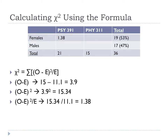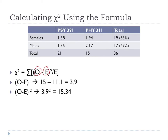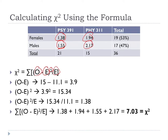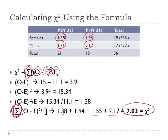Now we've done it once — that's really it. We're just going to do it three more times for all the other cells. Every other cell has an O and an E; we square the deviation and divide by E. Because each cell has a different observation and expectation, we get different numbers. Then the last step: we sum them all up. 1.38 plus 1.94 plus 1.55 plus 2.77 gives us a chi-square value of 7.03.